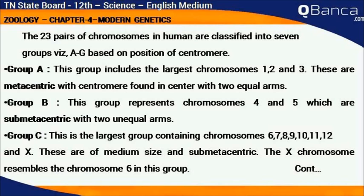Group A includes the largest chromosomes: 1, 2 and 3. These are metacentric, with the centromere found in the center and two equal arms. Group B represents chromosomes 4 and 5, which are sub-metacentric with two unequal arms.